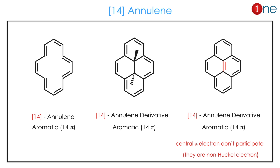If you look at the third example, it is interesting — only the outer electrons are involved in the conjugation. The middle bond does not participate in the conjugation; that is called a non-Hückel electron. It also has 14 pi electrons. Normally, exam questions come from non-Hückel double bonds, so you should know how double bonds participate in annulenes.